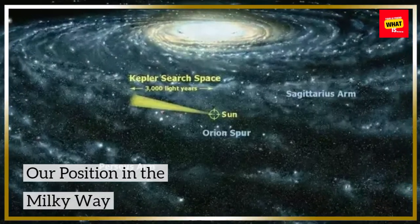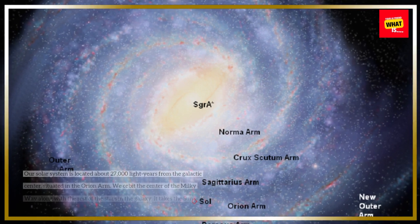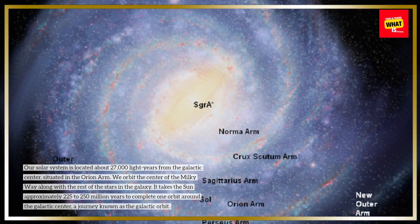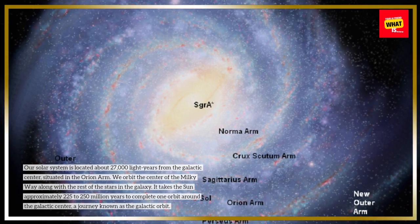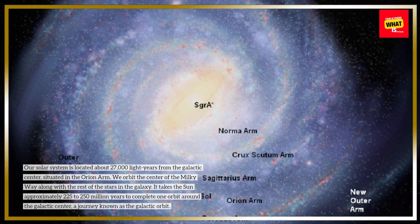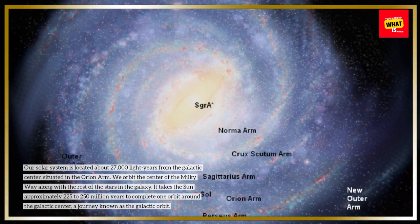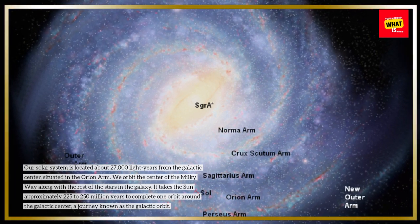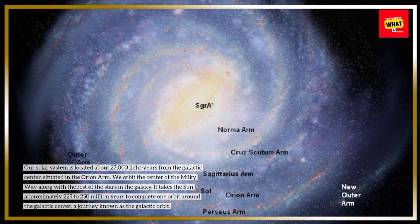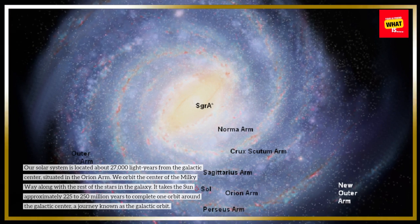Our position in the Milky Way. Our solar system is located about 27,000 light-years from the galactic center, situated in the Orion Arm. We orbit the center of the Milky Way along with the rest of the stars in the galaxy. It takes the Sun approximately 225 to 250 million years to complete one orbit around the galactic center, a journey known as the galactic orbit.